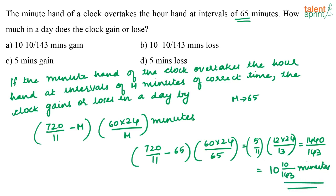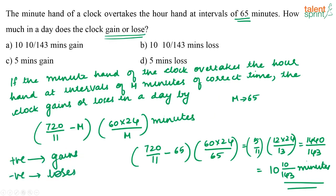When applying this formula, if the answer is positive the clock gains time; if negative, the clock loses. Here we get a positive answer, so the clock is gaining. The correct answer is 10/143 minutes gain. Option A is the correct answer.